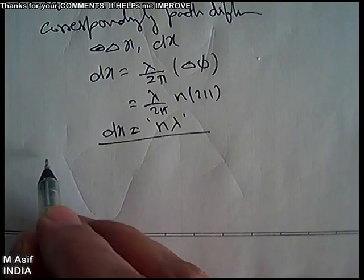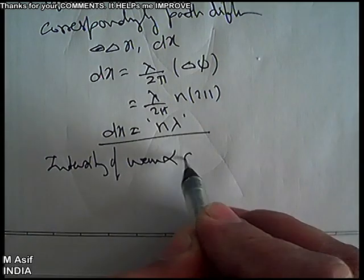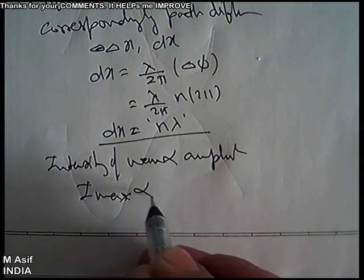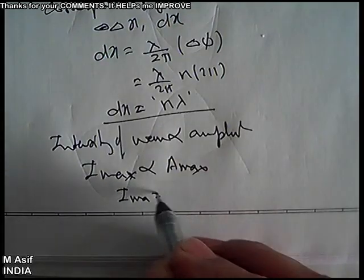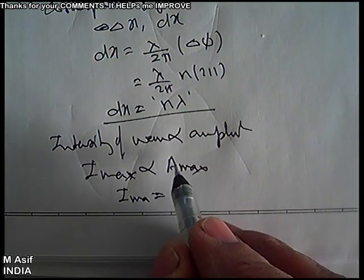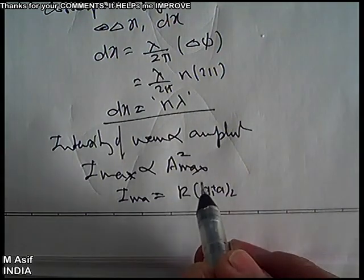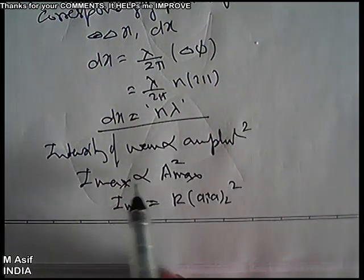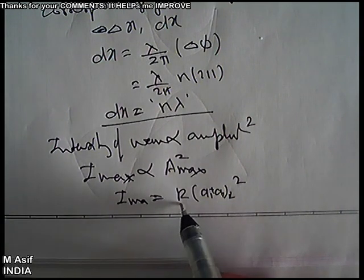The intensity of a wave is directly proportional to the square of its amplitude. So the maximum intensity I_max is proportional to A_max squared, which equals k·(a1 + a2)², where k is the wave constant.